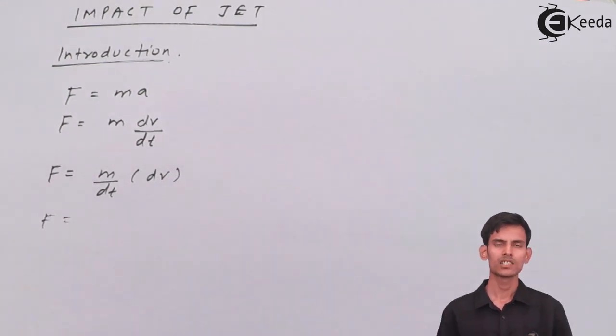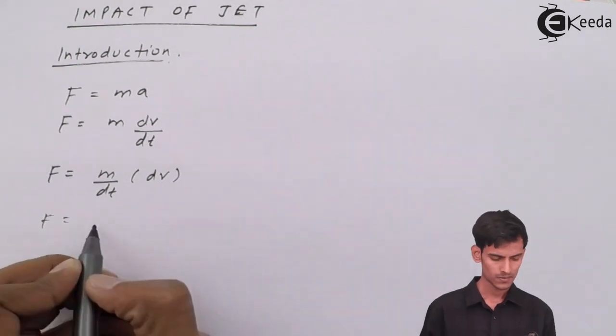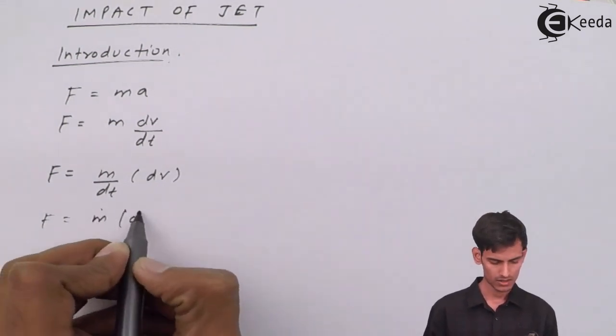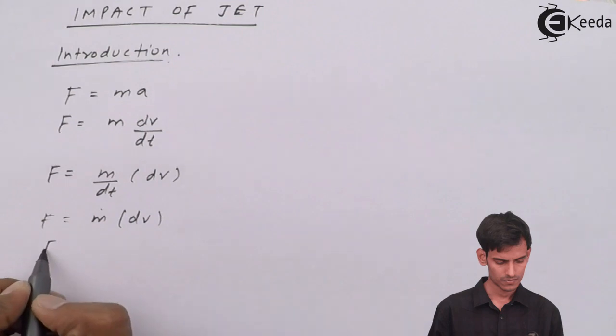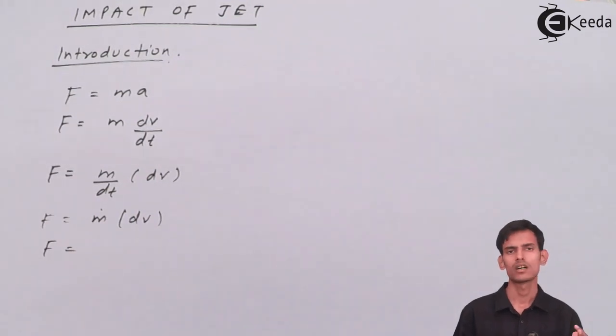m by dt is nothing but mass flow rate. m is mass and m by time is mass flow rate, and mass flow rate is mass that is kg per second.